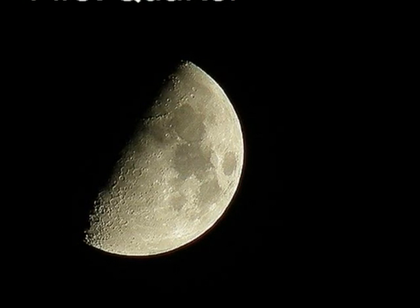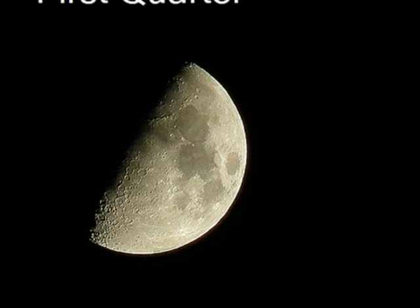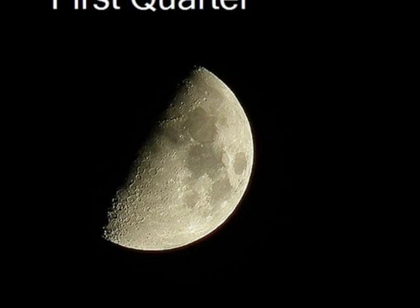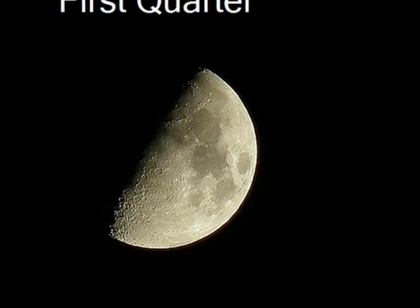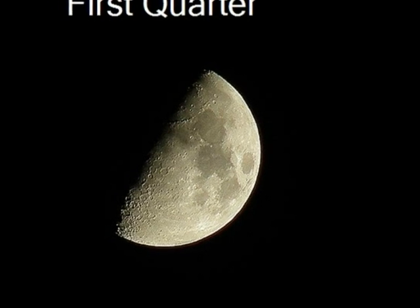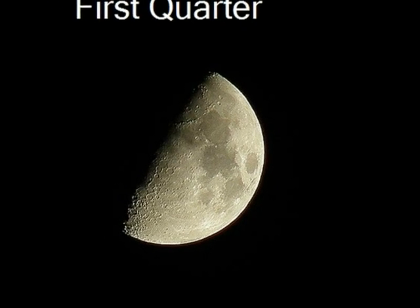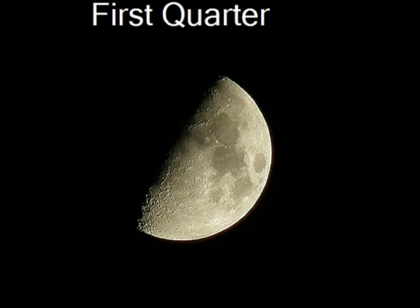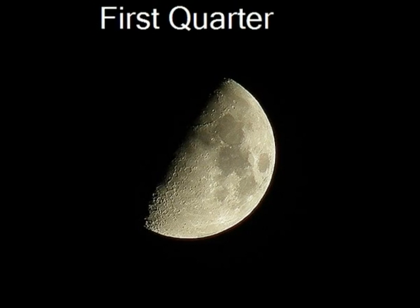Now comes the first quarter, often called a half moon because from the Earth the Moon appears half lit. The first quarter occurs halfway between a new Moon and a full Moon.